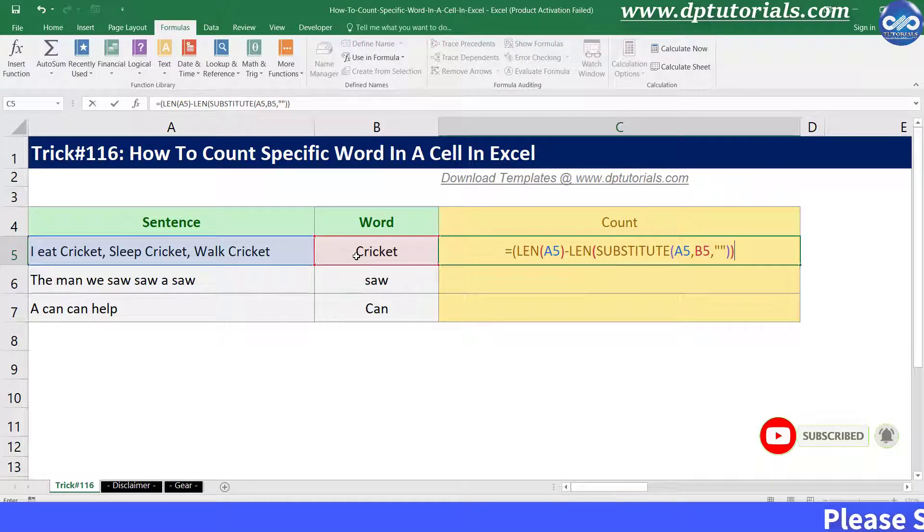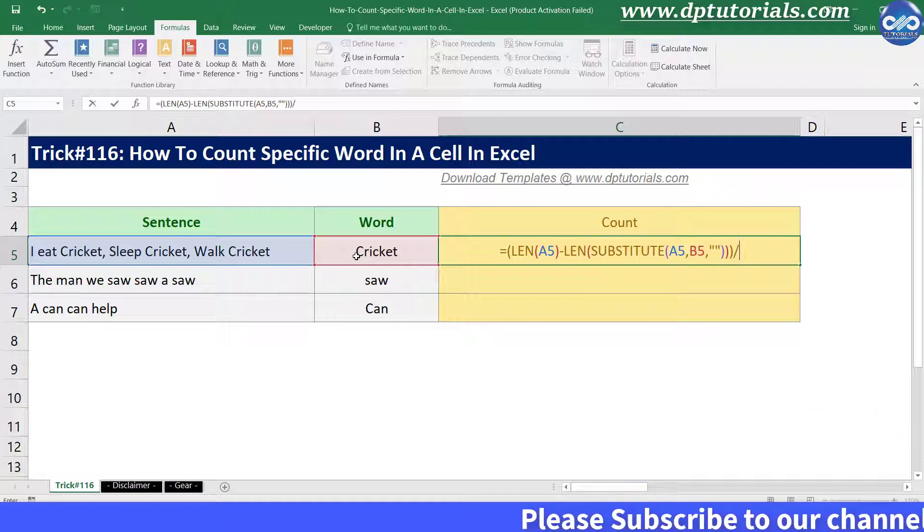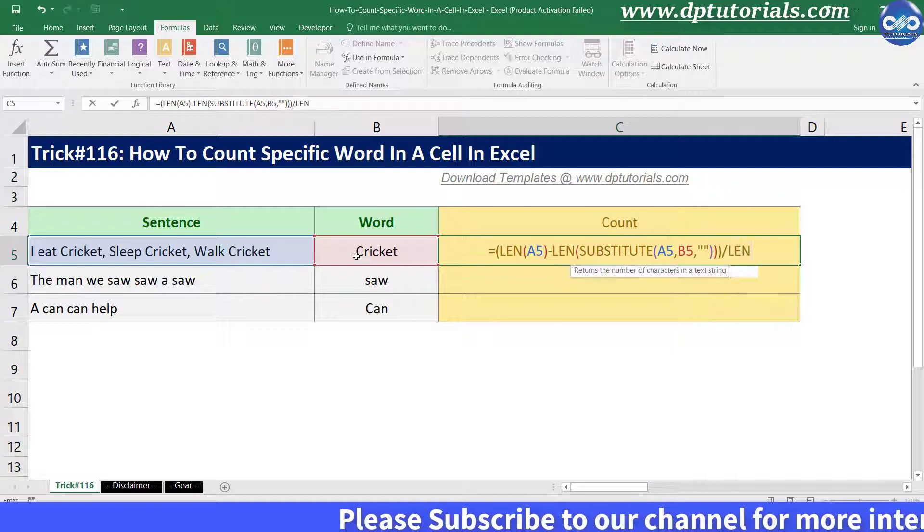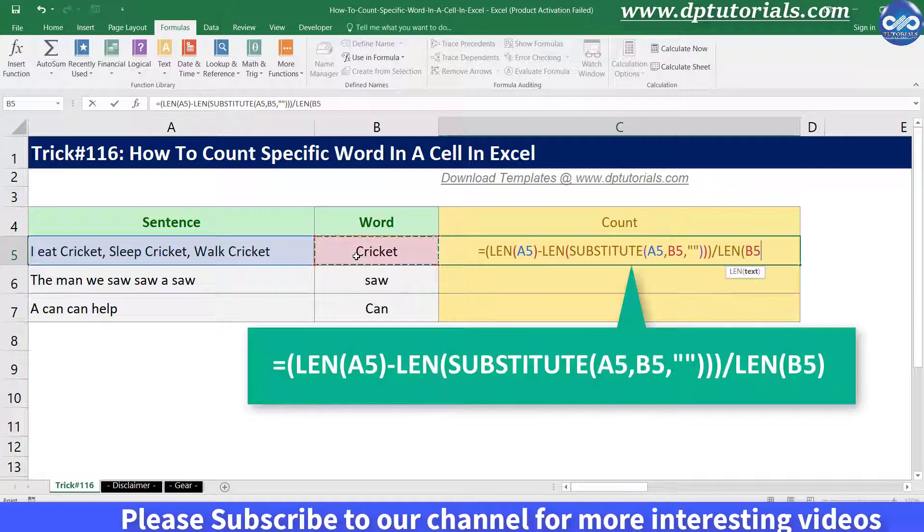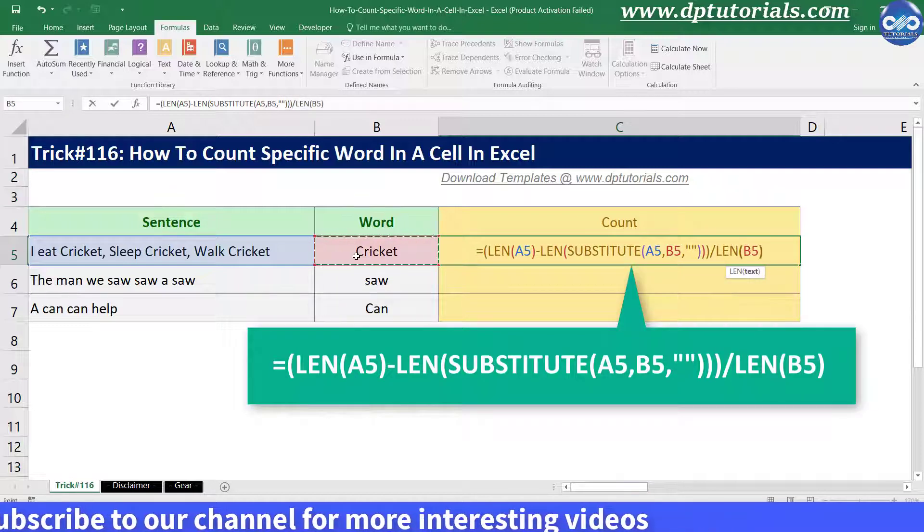And again close the bracket for LEN and close the bracket for the first LEN. Now divide it by LEN, open bracket, B5, and close the bracket.